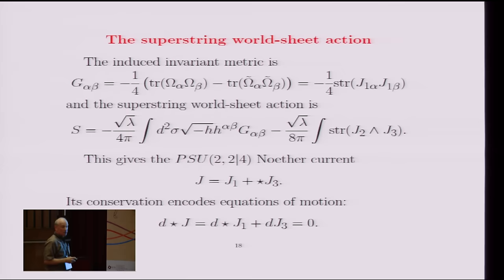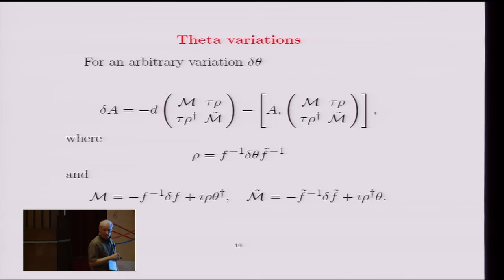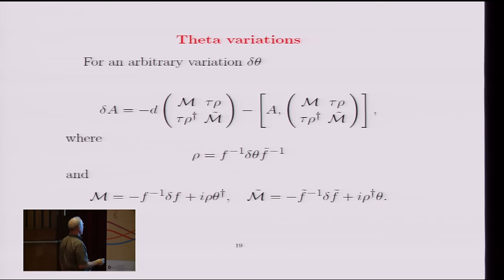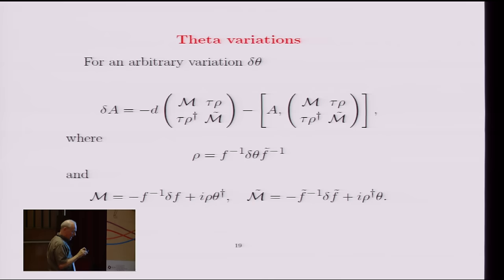Now, that's not the only equation of motion in this problem. And to find additional equations of motion, and also to study kappa symmetry, we consider varying the Grassmann coordinate theta. Remember, A only depended on the thetas, and so it varies under an arbitrary theta transformation in this way, where I've defined rho by this formula, and script M's by the formulas at the bottom. So all these, remember, F was just the square root of 1 plus theta dagger business. And so these are completely explicit formulas just involving the thetas for an arbitrary variation of that A thing.